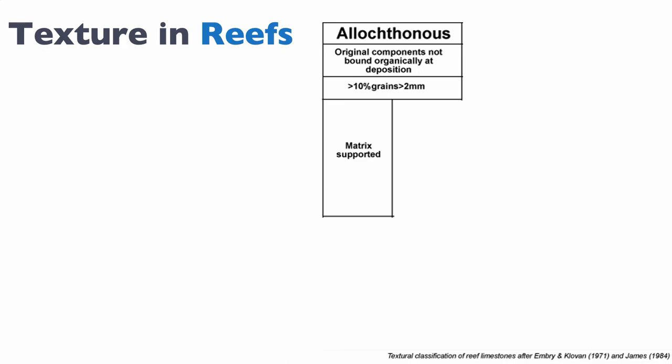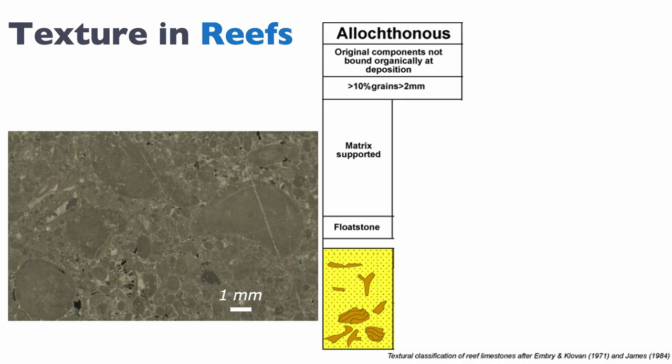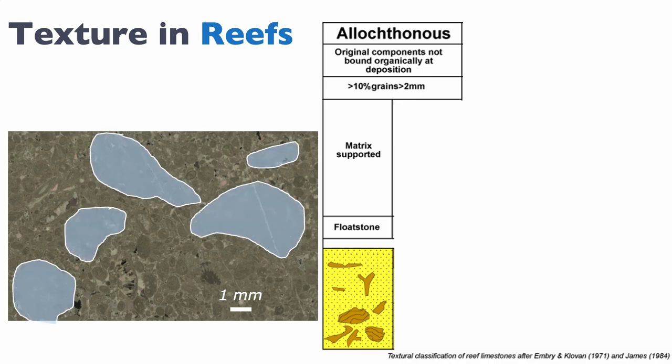If you are matrix-supported — supported by grains smaller than two millimeters — then we talk about a floatstone. The larger-than-two-millimeter grains float in the matrix, hence the term floatstone. Here's an example: notice the bar at one millimeter. You can clearly see more than 10% of grains in this thin section are larger than two millimeters, but these grains do not form a framework — they float in the matrix. That matrix, by the way, can be micrite or just smaller grains.